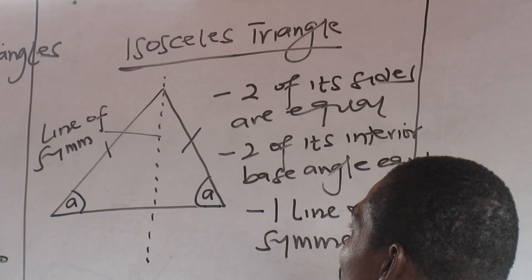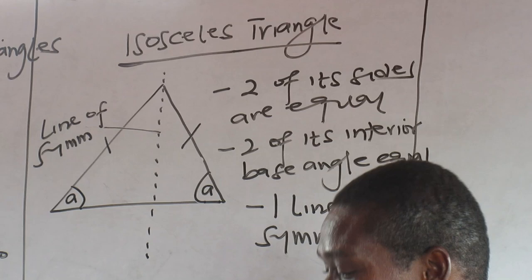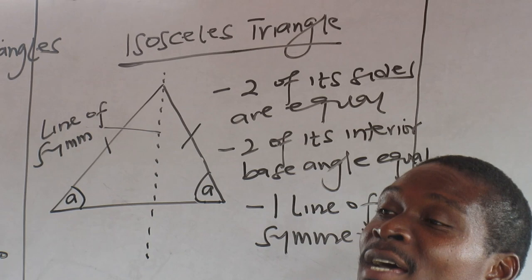Isosceles. Isosceles triangle. That is a triangle with two sides equal. When you see these geometric cuts here, they are equal. Now, there are two interior base angles equal. The angles counted down at their base are equal.